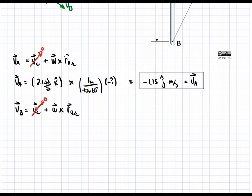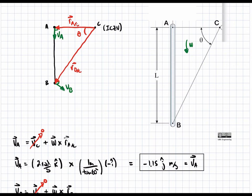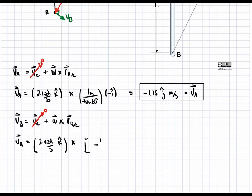Let's move on to the cross product. Omega has the same exact expression. So VB is equal to two radians per second in the k hat direction crossed to a bit of a more involved vector, because we have the x and y component. So along the x component, we have the same as previously. This is the x component over here. So it's the same as the previous equation, which is going to be one over tan of 60 degrees. And this is going to be in the negative i hat direction.